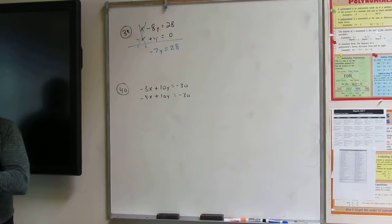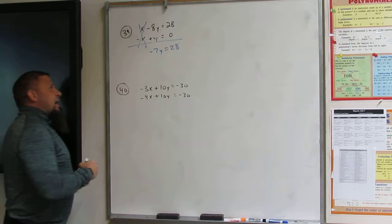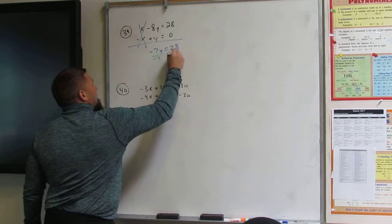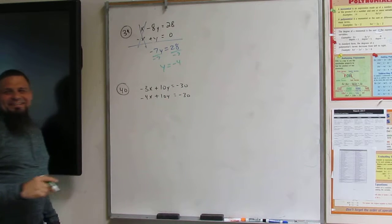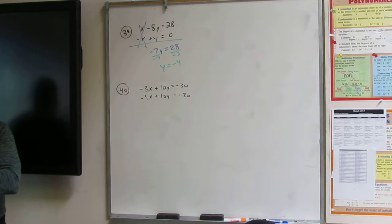Does 7 go into 28? No, barely. How many times? Like 3. 4 times 4. Okay. So we've got y is equal to negative 4.